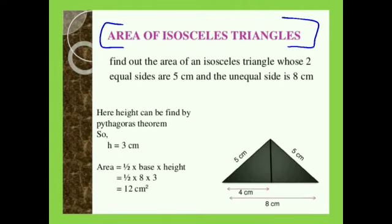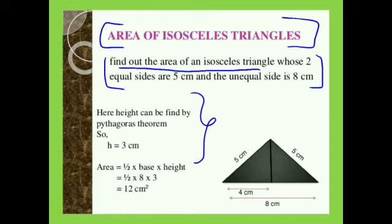In our next slide, we have area of isosceles triangle. To explain this, I have mentioned one problem here. We have to find the area of an isosceles triangle. To solve this, we first find the height by using Pythagoras theorem, since we have two equal sides and one unequal side. After finding height, we can easily find the area by using half into base into height.